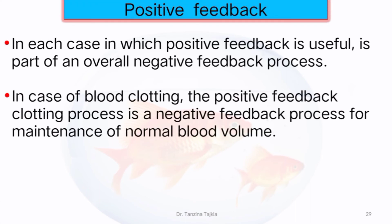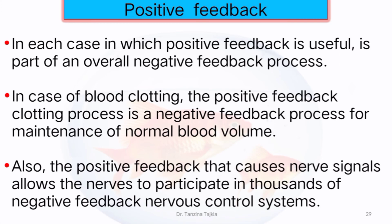In each case in which positive feedback is useful, it is part of an overall negative feedback process. In the case of blood clotting, the positive feedback clotting process is a negative feedback process for the maintenance of normal blood volume. Also, the positive feedback that causes nerve signals allows the nerves to participate in thousands of negative feedback nervous control systems.